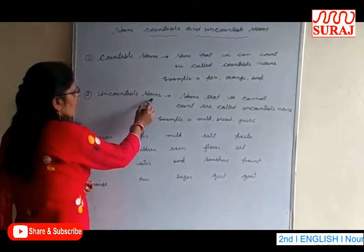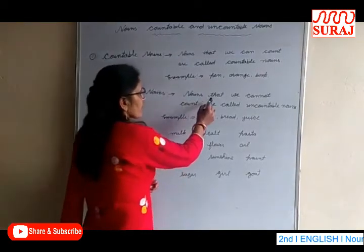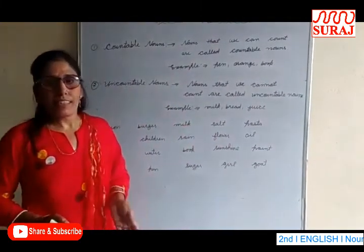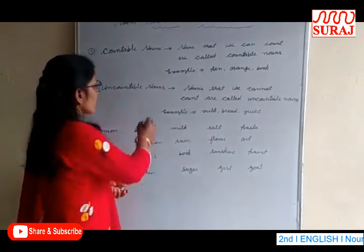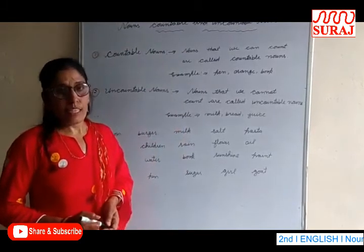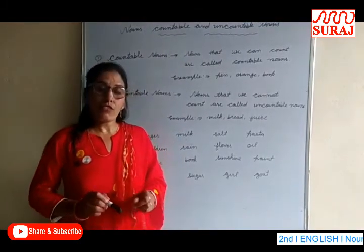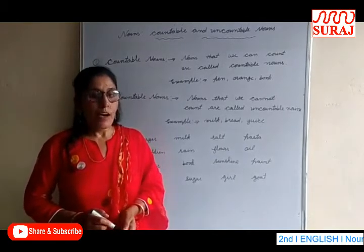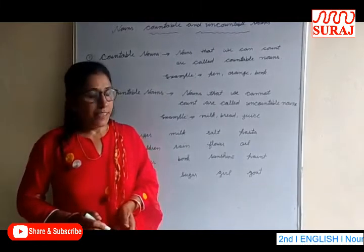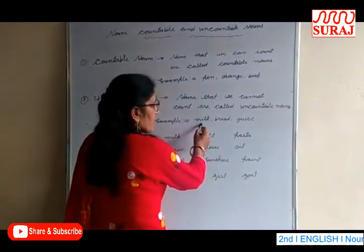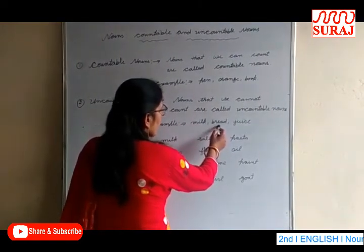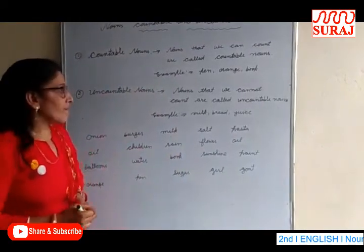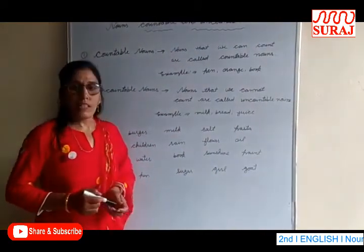Now we will discuss uncountable nouns. What are uncountable nouns? Nouns that we cannot count are uncountable nouns. We cannot use plural form with uncountable nouns. For example: milk is uncountable, bread is uncountable, and juice is uncountable.